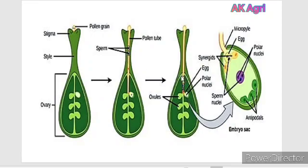Finally, this pollen tube reaches the ovule and it releases two sperm cells into the embryo sac. You can see here the single enlarged structure of this single ovule.